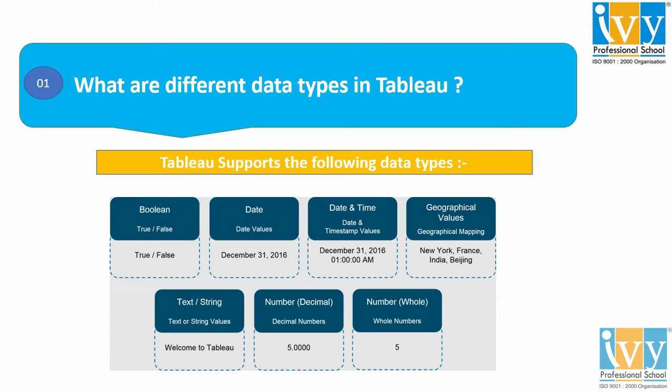Next is your Geographic data type. These are the values which are used in maps — values such as country name, state name, and city belong to geographic data types, and they are basically used for geographic mapping.